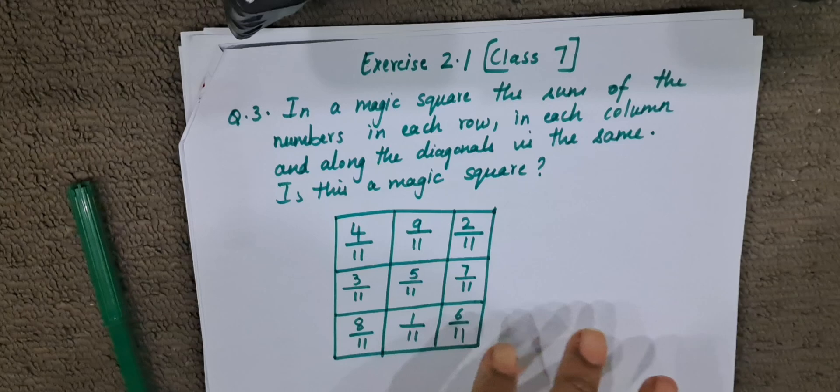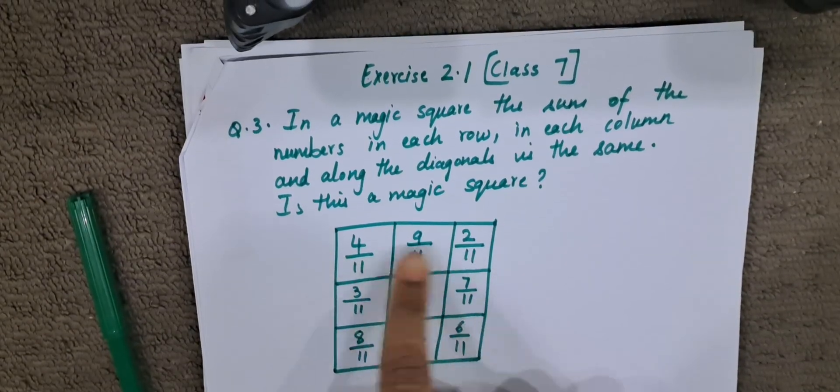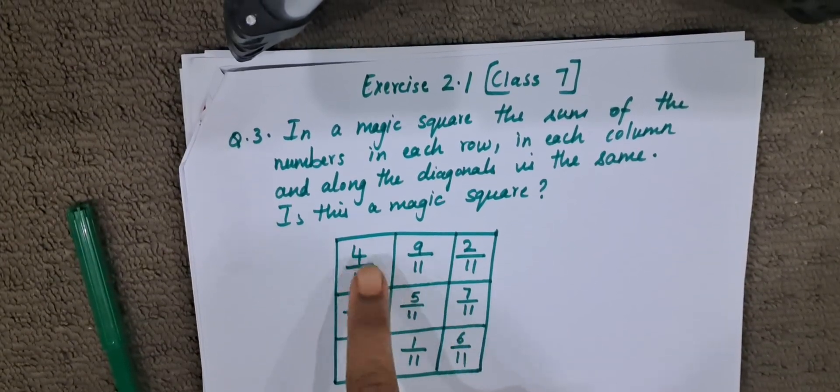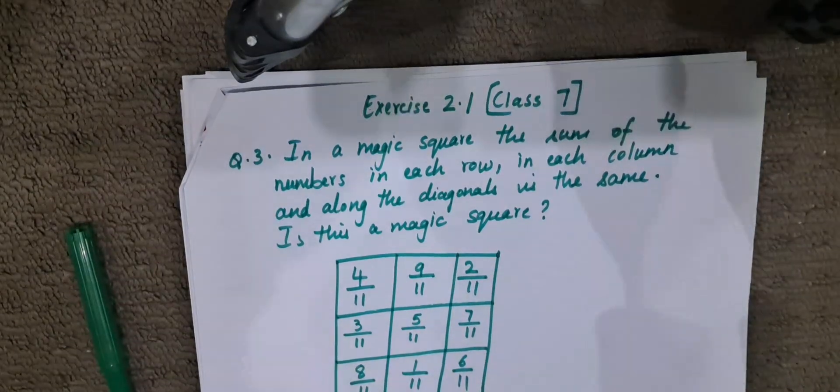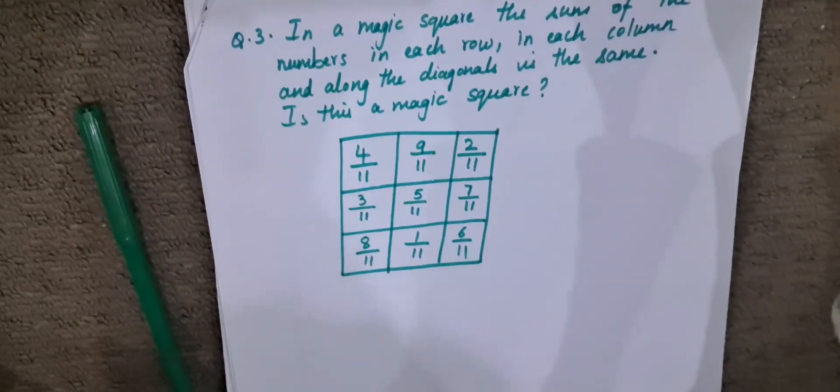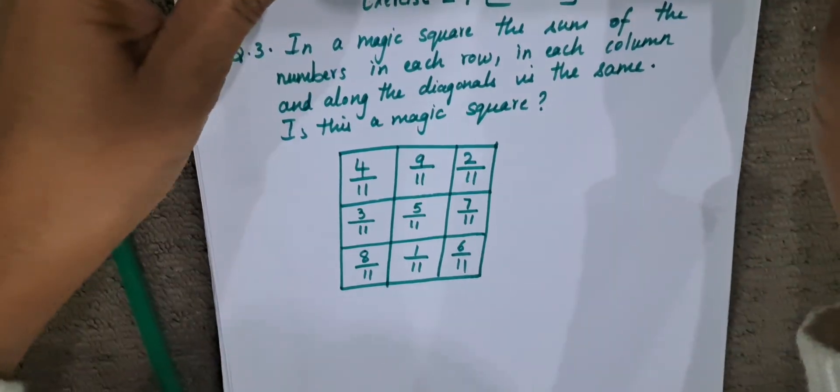Magic square means if we add all the numbers in a row and in a column, then the answer which we get will be equal. For example, let us begin with this one.